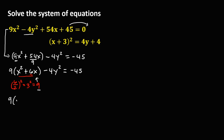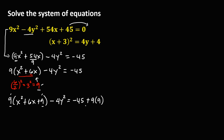So we have 9 times the quantity x squared plus 6x plus 9, then minus 4y squared equals negative 45. Since we added 9 inside the parentheses on the left side and we have a 9 outside, we need to multiply these two numbers — 9 times 9 — and add that to the right side.